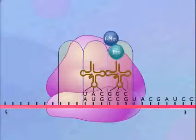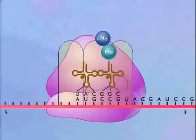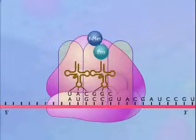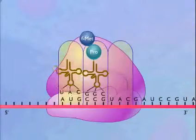The ribosome now advances a distance of one codon, and the transfer RNA that carried the formyl-methionine is released at the E-site.